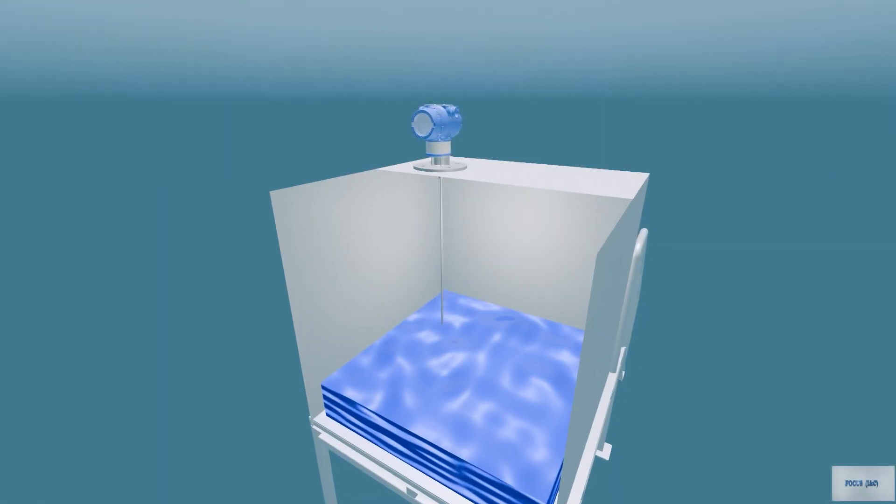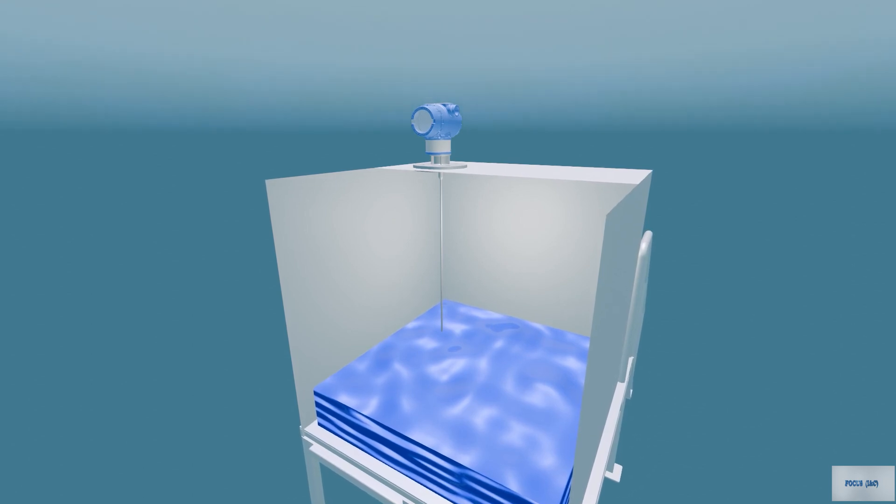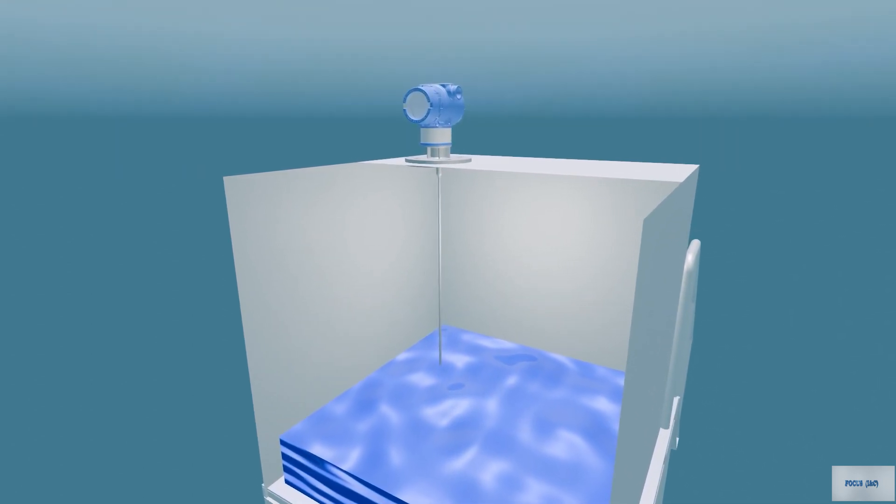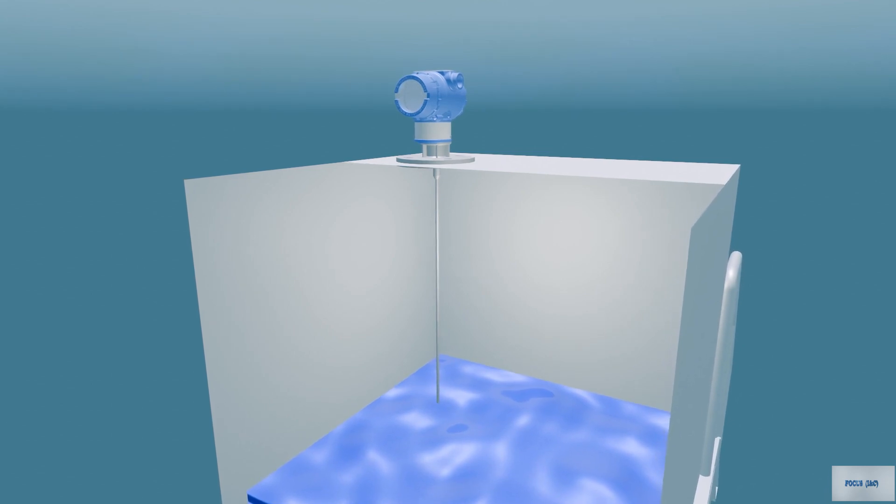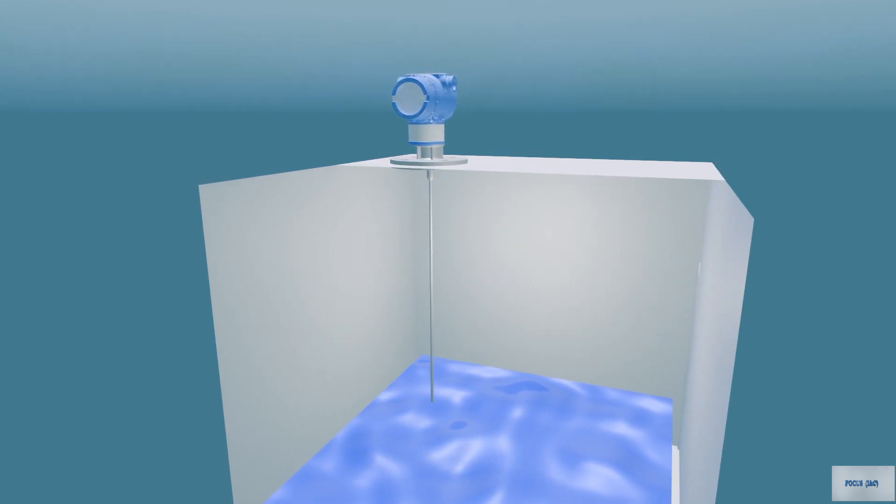Guided Wave Radar utilizes microwave technology, which is only influenced by materials that reflect energy, ensuring that temperature variations, dust, pressure, and viscosity do not compromise accuracy.